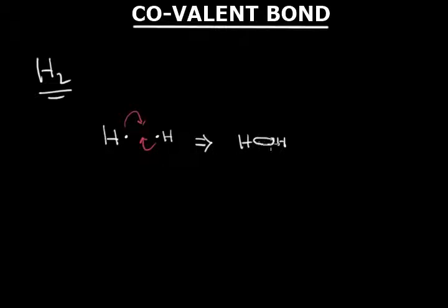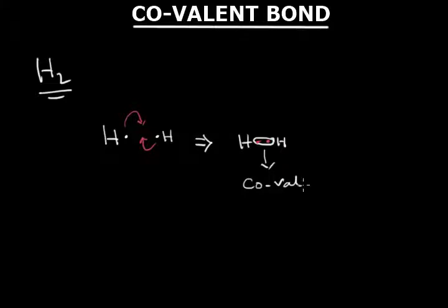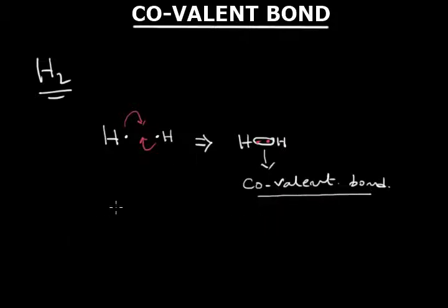The bond formed is called a covalent bond. To define it again: in order to attain the nearest noble gas configuration, if two atoms donate equal number of electrons from the outermost shell and form an electron pair and use the electron pair equally, the bond formed is called a covalent bond. It is always formed between two non-metals.